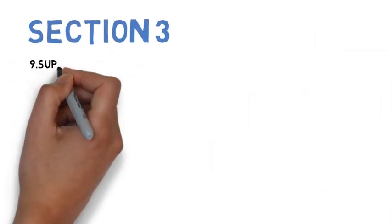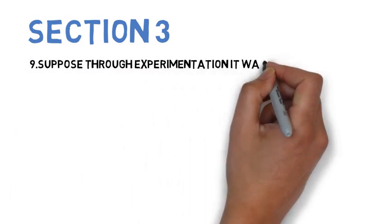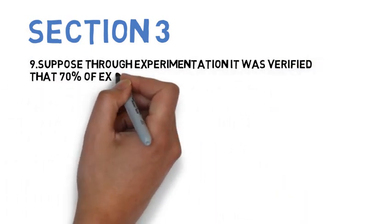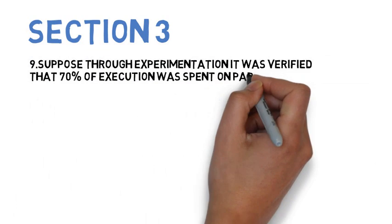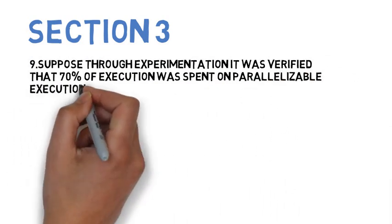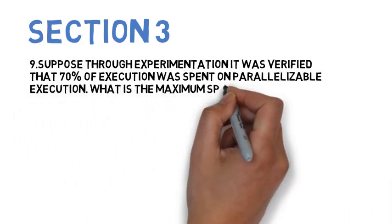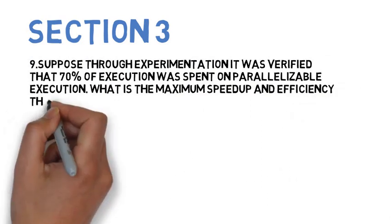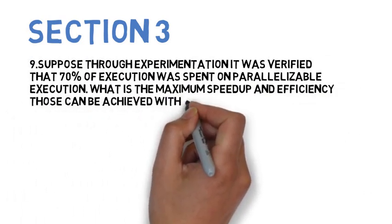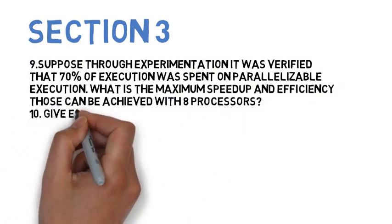Talking about the questions that you need to do in Section 3, the first question is suppose through experimentation it was verified that 70% of the execution was spent on parallelizable execution, what is the maximum speedup and efficiency that can be achieved with 8 processors?